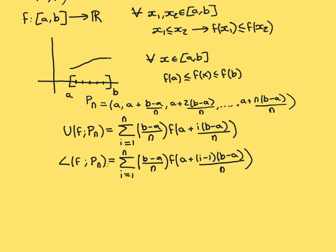Now let's consider the lower Riemann sum for our function over one of these partitions P_N. Again, we want a formula for this that works for a general N. It's going to be the sum over all the subintervals — sum from i equal to 1 to N. You want the length of the subinterval, which is always (b−a)/N, and then you want the infimum of the function over each of the subintervals.